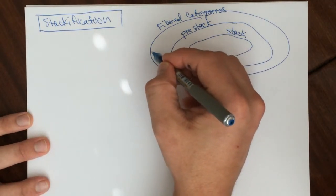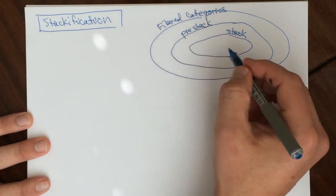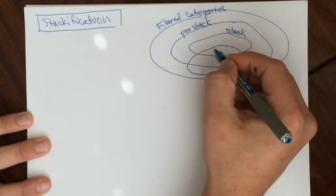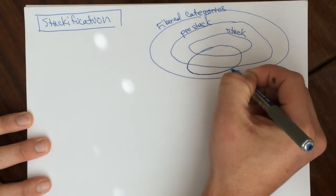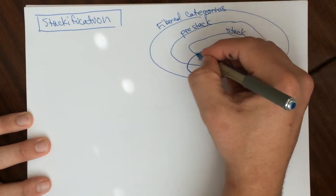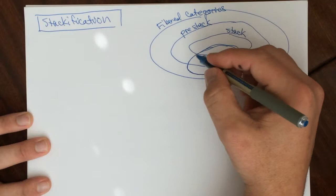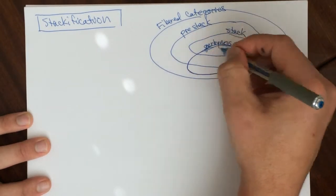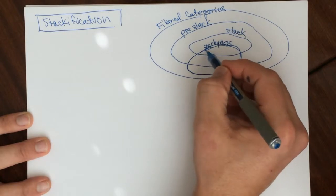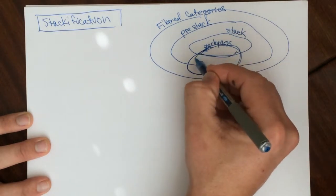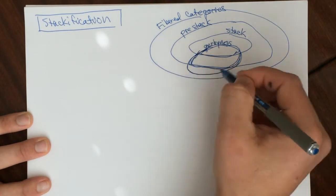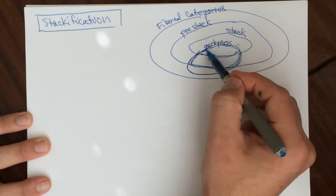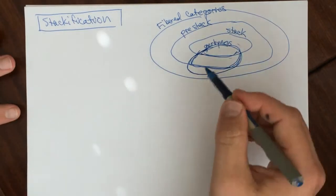Let's divide this into pieces. The outermost layer — the whole thing — consists of what I'll call 'jerby' fibered categories. Then we have jerby pre-stacks. And the innermost layer will be actual jerbs. So we have three nested layers, each included in the next.